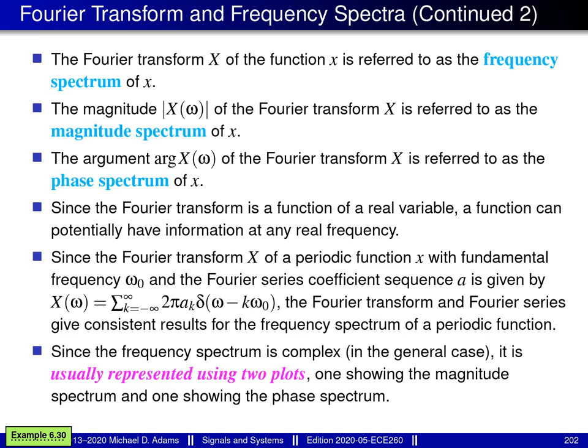I'd like to introduce some terminology related to the Fourier transform and frequency spectra. The Fourier transform of a function is referred to as its frequency spectrum. The magnitude of the Fourier transform is referred to as its magnitude spectrum. The argument of the Fourier transform is referred to as its phase spectrum. Since the Fourier transform is a function of a real variable, a function can potentially have information at any real frequency — this is different from the case of Fourier series, where a function can only have information at certain particular frequencies.